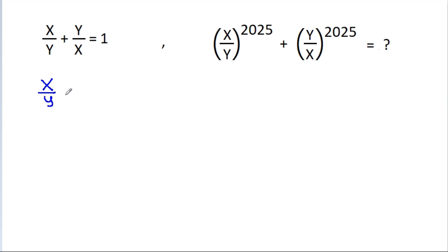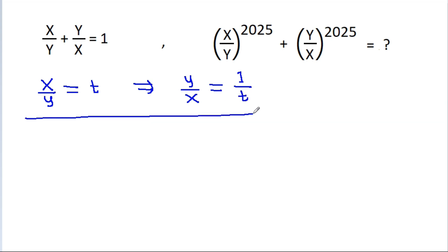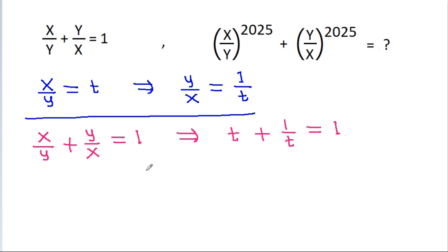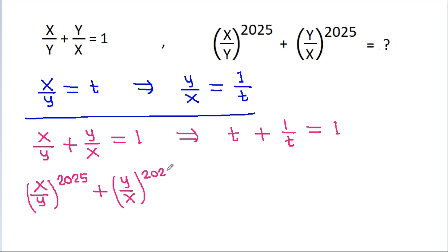Suppose x by y is equal to t. Then y by x will be equal to 1 by t. And we have x by y minus y by x is equal to 1. So x by y is t minus y by x is 1 by t, it is equal to 1. And we have to find x by y power 2025 minus y by x power 2025, which will be t power 2025 minus 1 by t power 2025.